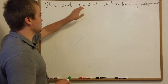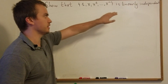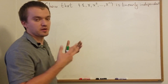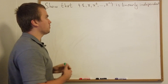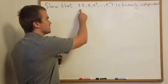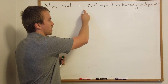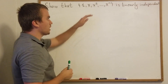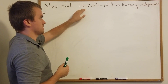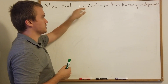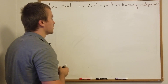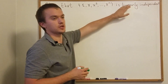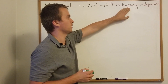Hello guys! In this video I want to show that a set is linearly independent. Why do you need this? Because sometimes we're given a vector space of polynomials and we want to show that these elements are actually a basis of our vector space of polynomials, and one of the requirements for a set to be a basis is that the set is linearly independent. So if you want to prove this problem, let's first recover the definition of linearly independent.